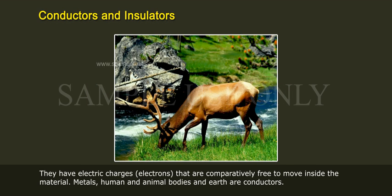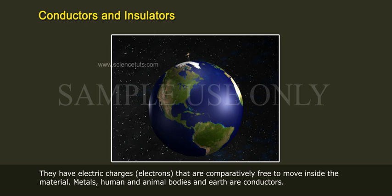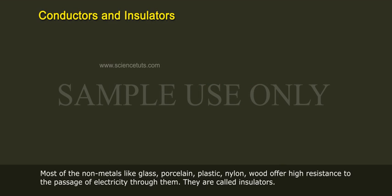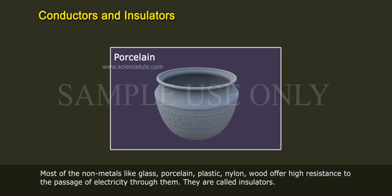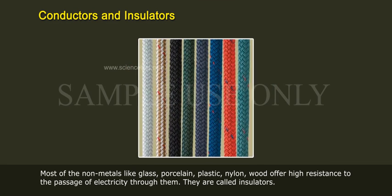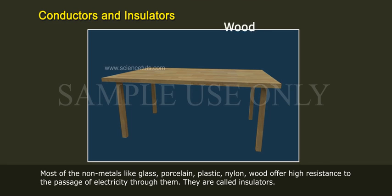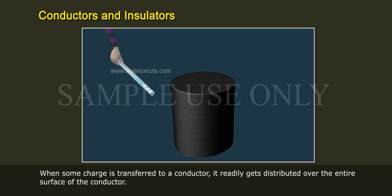Metals, human and animal bodies, and earth are conductors. Most of the non-metals like glass, porcelain, plastic, and nylon offer high resistance to the passage of electricity through them. They are called insulators.